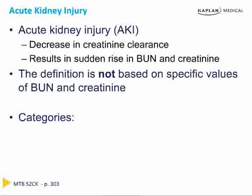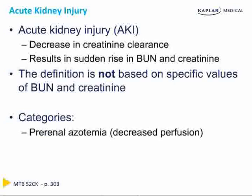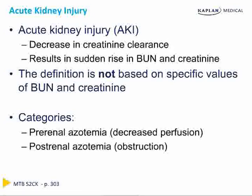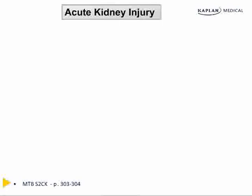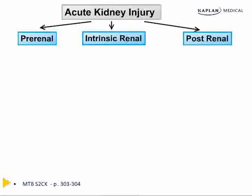The three main etiologies of AKI are classified by their relationship to the kidney. Prerenal azotemia is a problem with perfusion or adequate volume to the kidney. Postrenal azotemia is a problem with obstruction of urine flowing from the kidney. Intrinsic renal disease is usually a result of an ischemic or toxic insult to the kidney itself. Prerenal and postrenal etiologies together account for more than 80% of all causes of AKI, and the AKI is reversible if you correct the underlying problem.